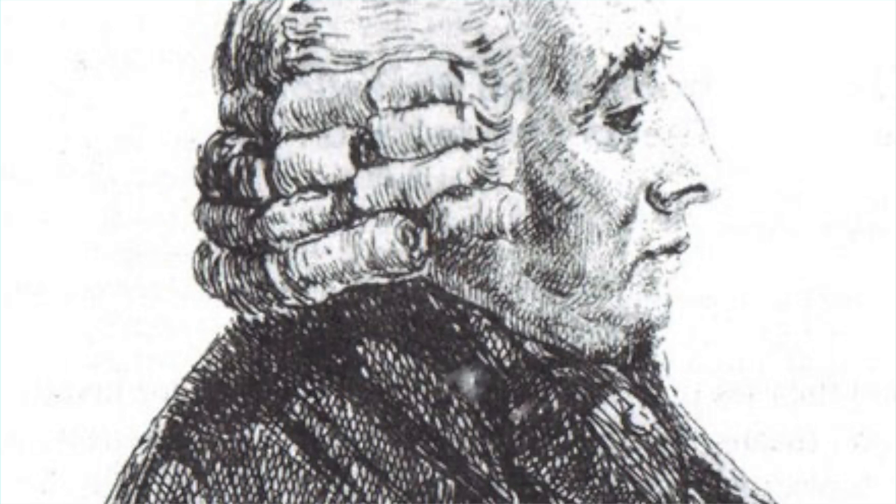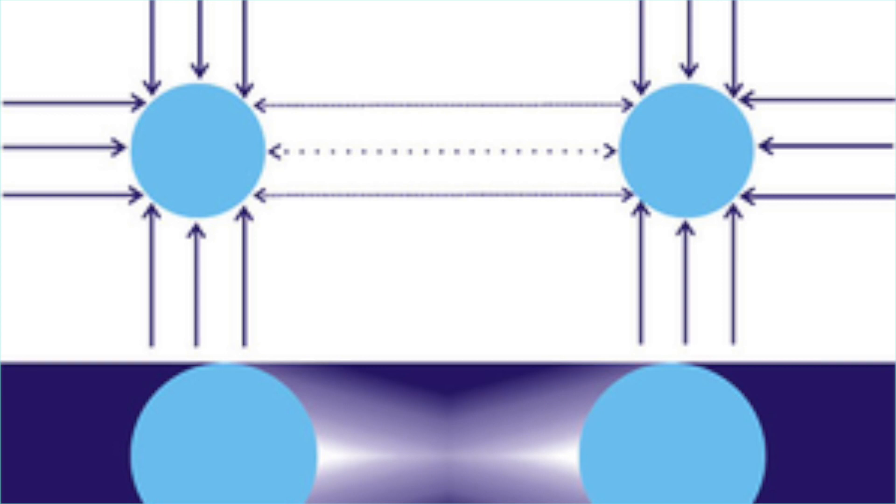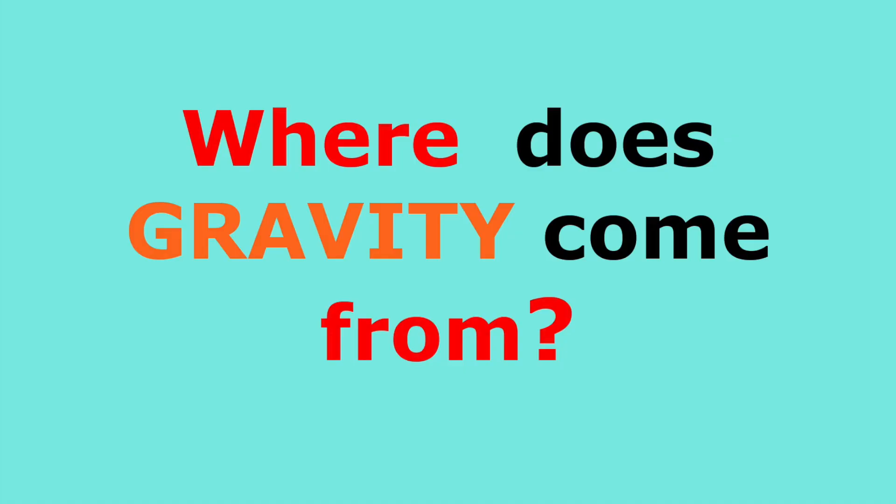According to this model, two material bodies partially shield each other from incident corpuscles resulting in a net imbalance in the pressure exerted by the impacts of corpuscles on the bodies, and that tends to bring the two bodies closer together. This mechanical explanation of gravitation was never greatly admitted, even if some physicists went on thinking about it until the early 20th century, by which time it was generally considered to have been definitely discredited.